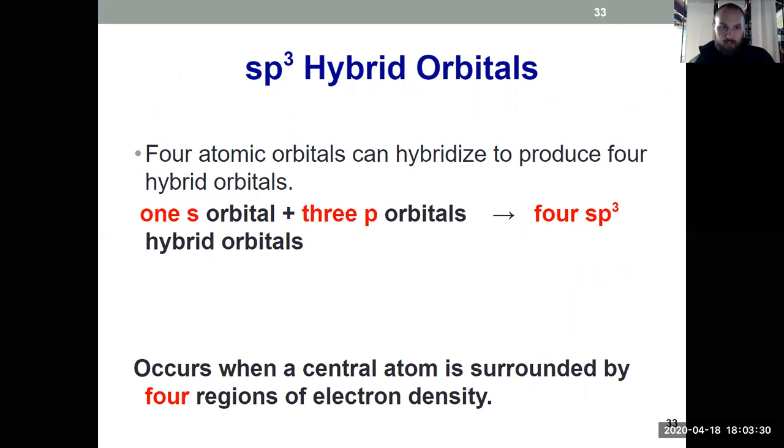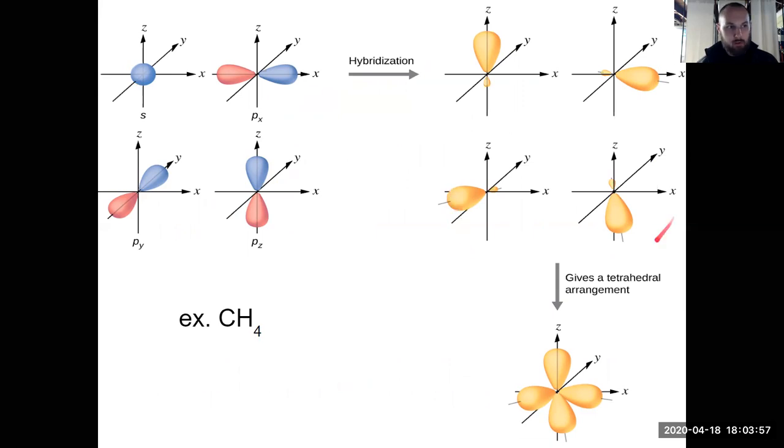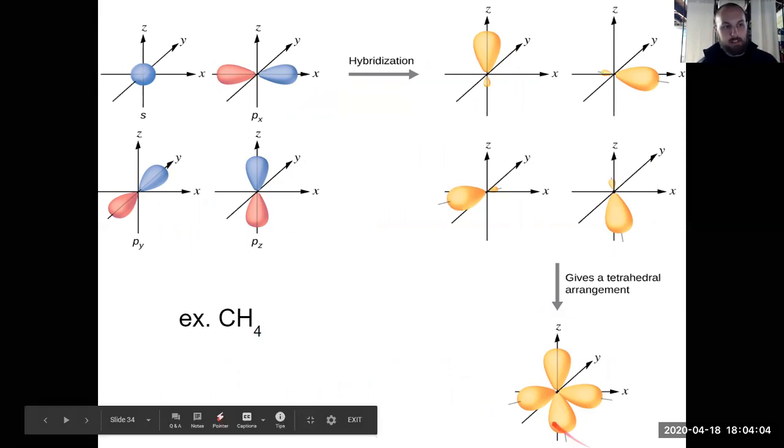What about four regions of electron density? Now it's 1s and 3p's coming together. So 1 plus 3 equals four new hybrid orbitals, and those new orbitals are called sp3 because it was 1s and 3p's that came together. So that's when we're surrounded by four regions of electron density. We see that here with CH4, methane, 1s, 3p's come together, form four new orbitals, and to follow VSEPR and be as far apart as possible, those adopt a tetrahedral arrangement.